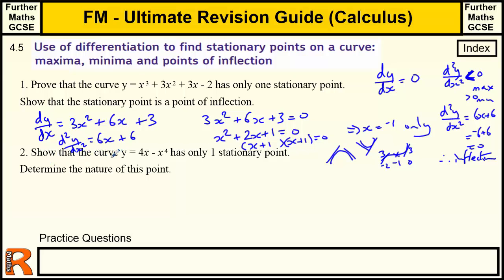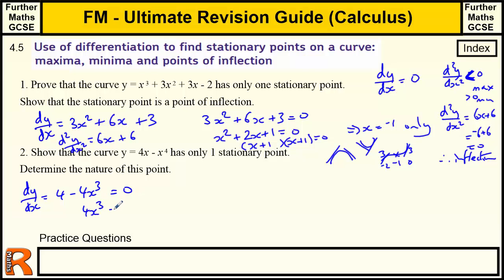Question 2: Show that the curve y equals 4x minus x to the 4 has only one stationary point, and determine the nature of this point. Differentiating: dy/dx = 4 minus 4x cubed. Setting that equal to zero gives 4x cubed = 4, so x cubed = 1, therefore x = 1. There's only one solution, so there is only one stationary point.